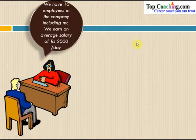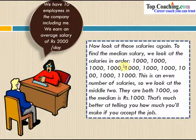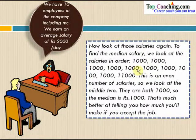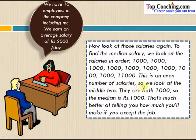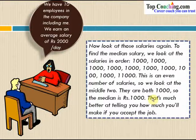Coming back to the salary example — to find the median salary, we look at the salaries in order. Nine employees earn Rs. 1000 per day and the owner earns Rs. 11,000. When arranged in increasing order, this is an even number of salaries, so we look at the middle two, which are both 1,000. So (1,000 + 1,000) / 2 = 1,000. The median salary is Rs. 1000 — and that's the amount you would actually get if you accept the job. In this case, the median is a more effective tool of representing the data compared to the mean.